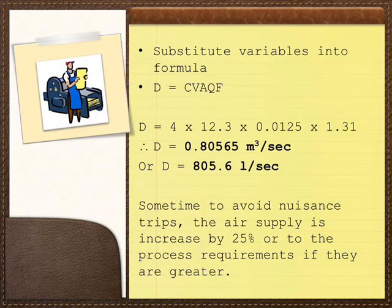The variables are substituted into the formula. D equals 4 times 12.3 times 0.0125 times 1.31, which equals 0.80565 cubic metres per second, or 805.6 litres per second. Sometimes, to avoid nuisance trips, the air supply is increased by 25% or to the process requirements if they are greater.